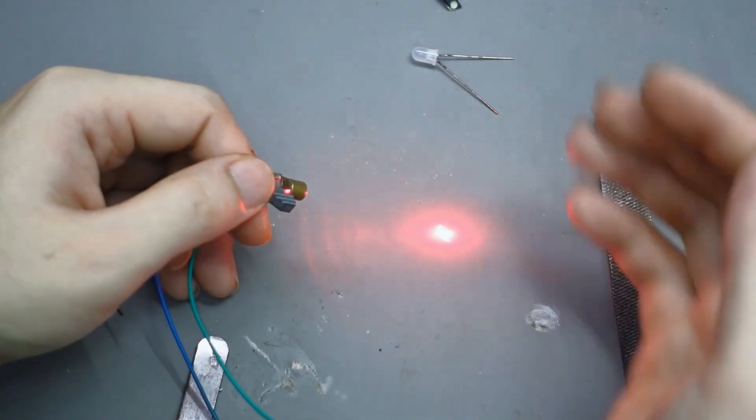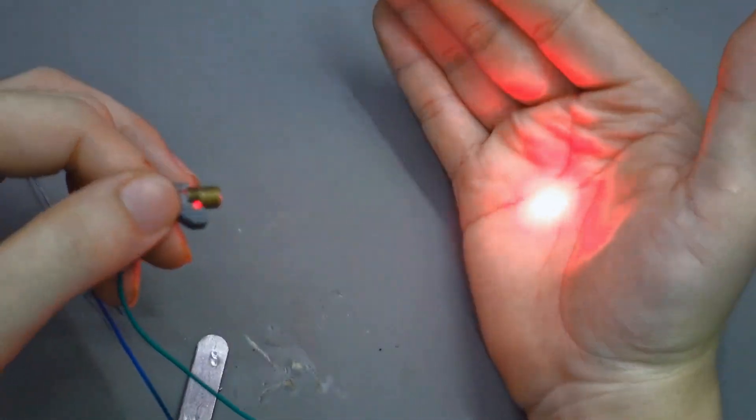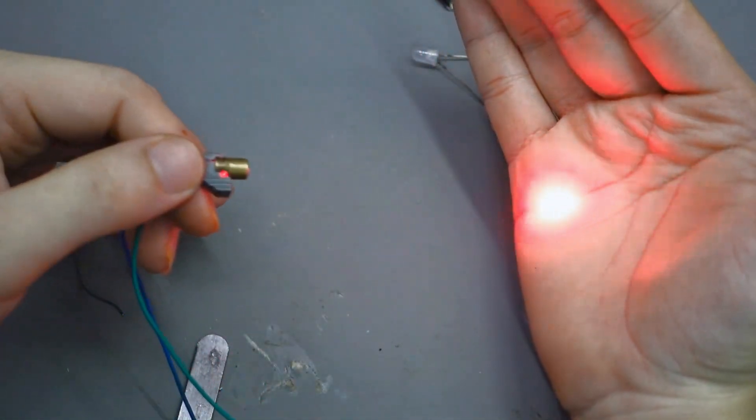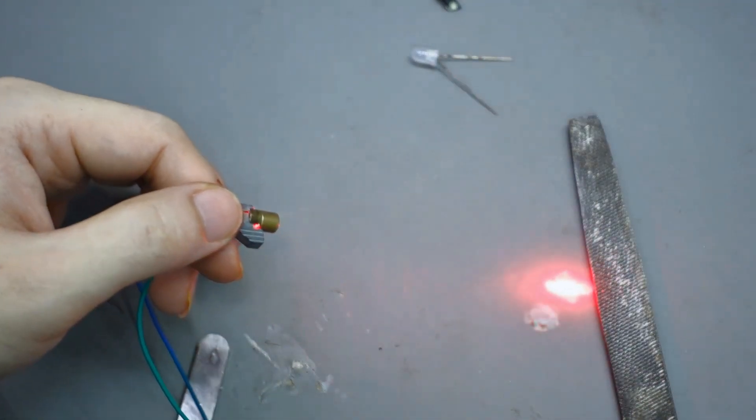Right now, I'm testing the laser diode using a power supply set to around 2 volts. As you can see, the light looks a bit weak, doesn't it? That's because I'm only running it at a low voltage for now.